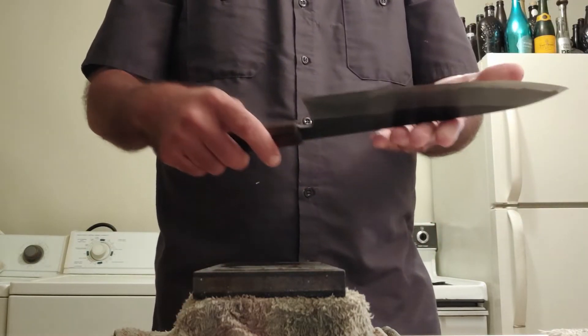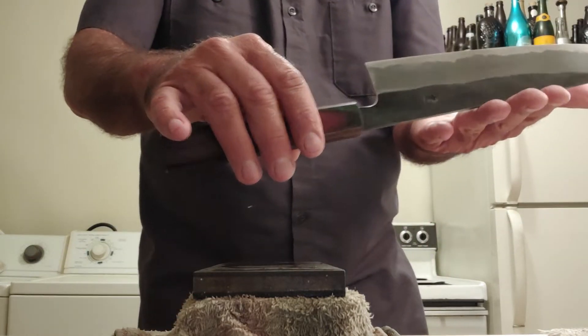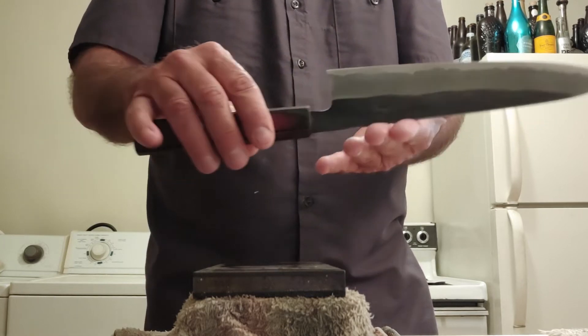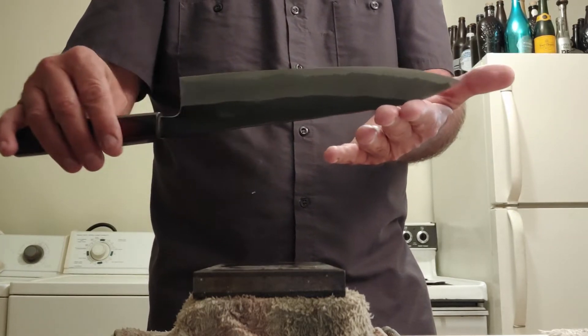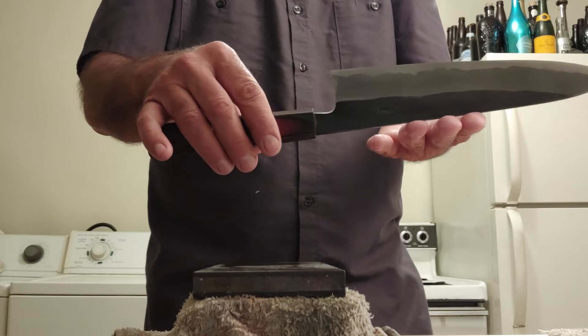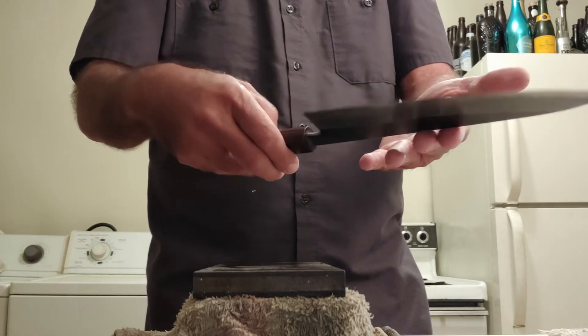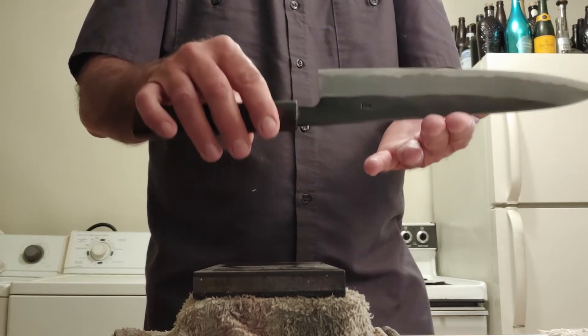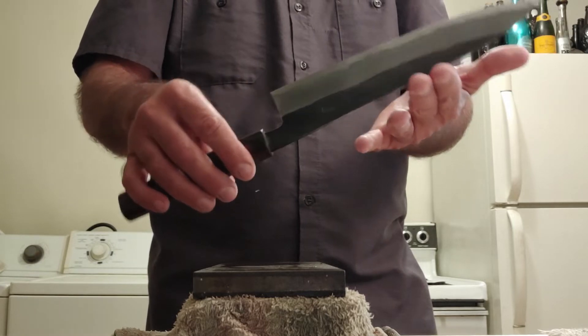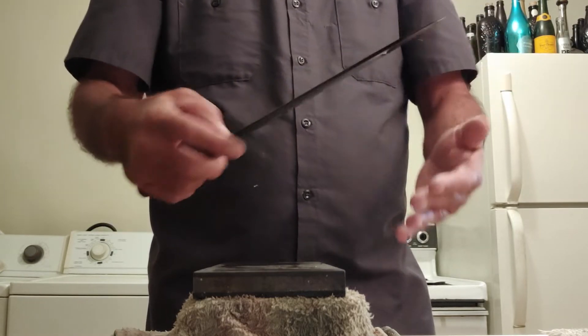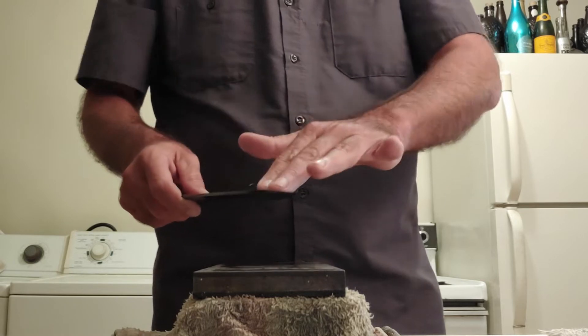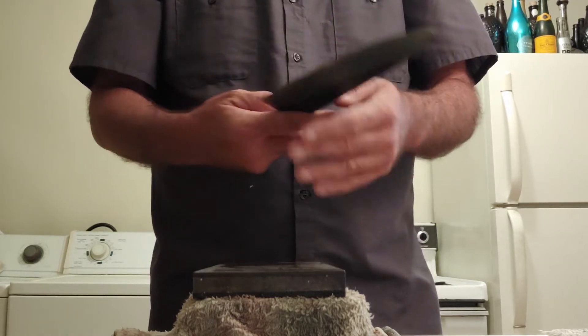So I kind of want to show you what I'm talking about. This Tanaka Gyuto would be an example of a wide beveled knife. And to thin a Gyuto or other knife set up this way, you would lay that whole big wide flat bevel on the stones, and off you go.